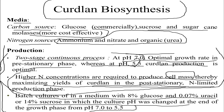Due to high nitrogen content in the pre-stationary phase, more cell mass is produced. Greater cell mass then results in maximum curdlan production in the post-stationary phase, where nitrogen content becomes limited.